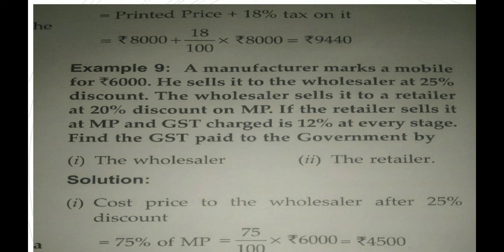A manufacturer marks a mobile for Rs. 6000. He sells it to the wholesaler at 25% discount. The wholesaler sells it to a retailer at 20% discount on mark price. The retailer sells it at mark price and GST charged is 12% at every stage. Find the GST paid to the government by the wholesaler and by the retailer.